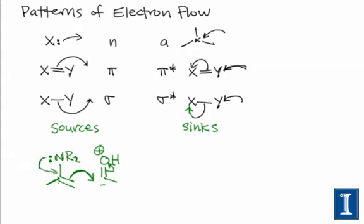The curved arrows for this key step look something like this, and it's an important step because it establishes the key carbon-carbon bond in the product. So the resulting structure contains a positively charged nitrogen now, a new carbon-carbon bond, and the oxygen atom is now neutral.